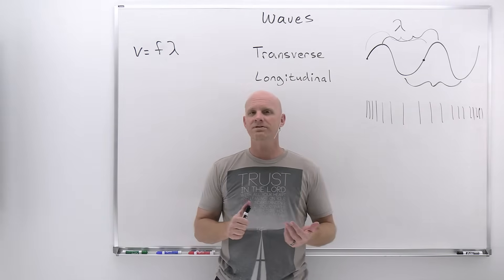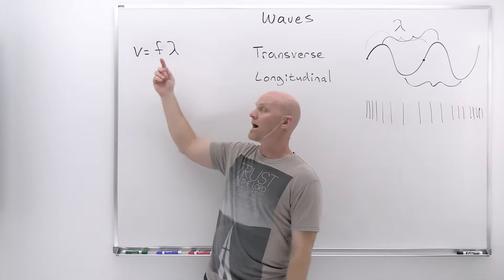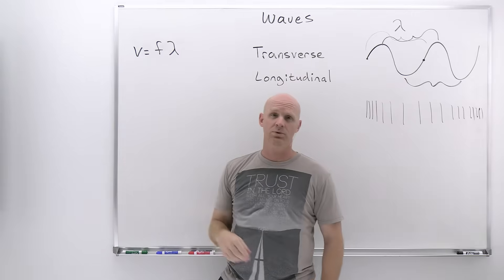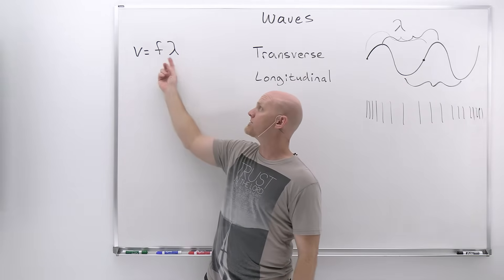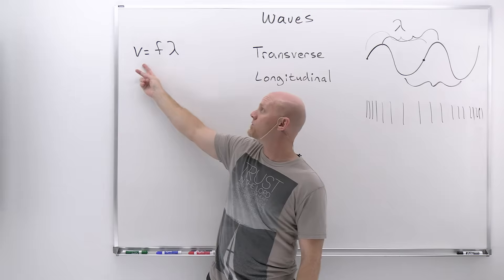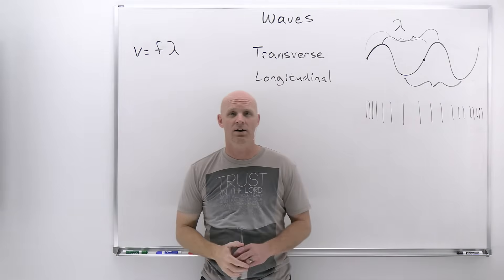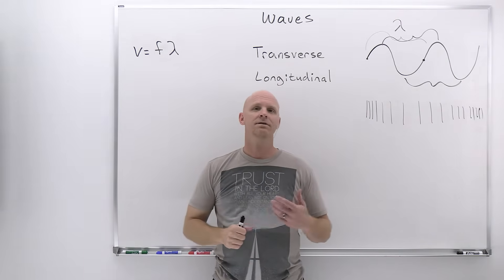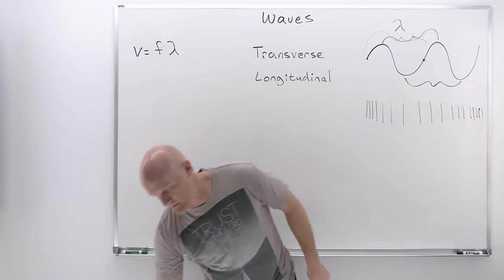The relationship between the speed of a wave, its frequency, and its wavelength is simply: wave speed equals the product of frequency and wavelength (v = fλ). Wave speed is proportional to frequency and proportional to wavelength. With three variables in that equation, if you're provided with two, you can solve for the third.